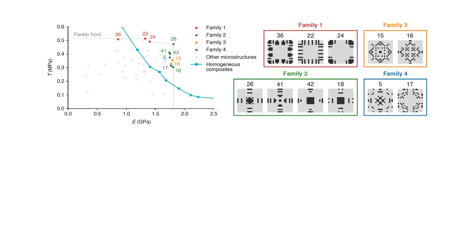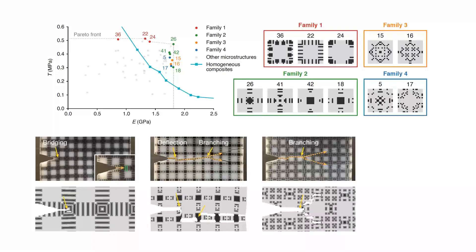Upon closer examination of the Pareto-optimal designs, we are able to categorize them into several representative microstructure families and analyze the outstanding toughening mechanisms behind their performance. Notably, we identify bridging, deflection, and branching as the most common mechanisms without any prior knowledge of microstructure design.